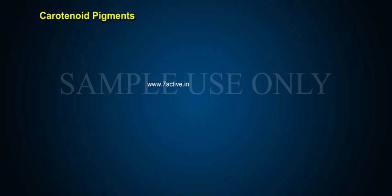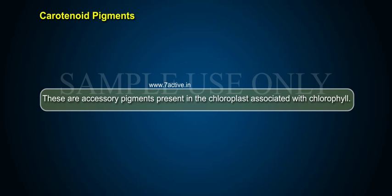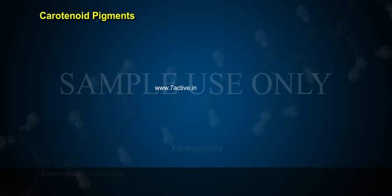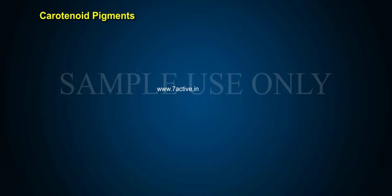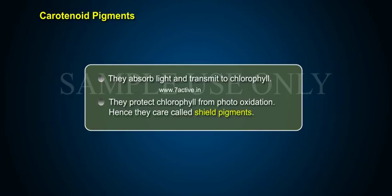Carotenoid pigments are accessory pigments present in the chloroplast, associated with chlorophyll. Carotene (C40H56) is orange in color, and xanthophylls are yellow in color. They absorb light and transmit it to chlorophyll. They protect chlorophyll from photo-oxidation. Hence, they are called shield pigments.